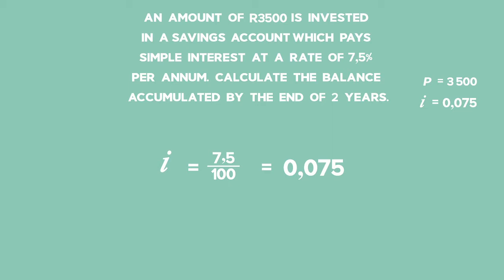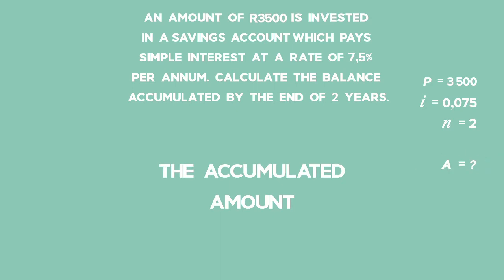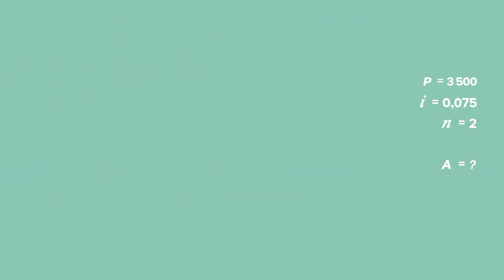You are then asked to calculate the balance accumulated by the end of two years. N is equal to 2, and the value you are asked to work out is the accumulated amount, which is A. Remember, you are dealing with a simple interest investment, therefore we need to use the formula.